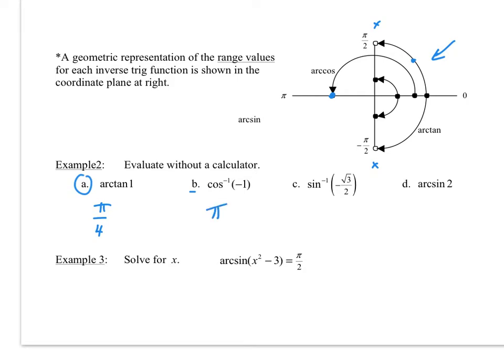Whenever you see a negative number for inverse sine or inverse tangent, you're going to get a negative angle measurement. So the arc sine of negative √3/2: the y value for this triangle would be negative √3/2, which happens at negative π/3. Then the arc sine of 2 — when is the sine equal to 2? It never is, so we get does not exist, because our domain is negative 1 to 1.